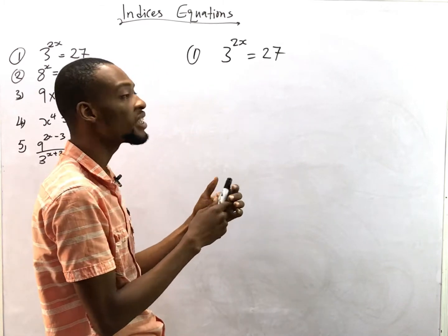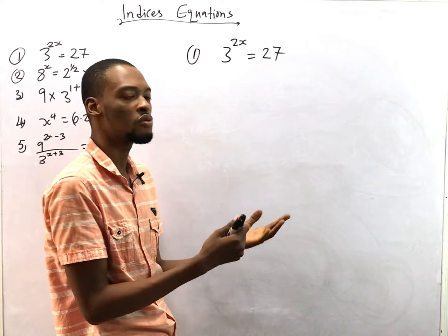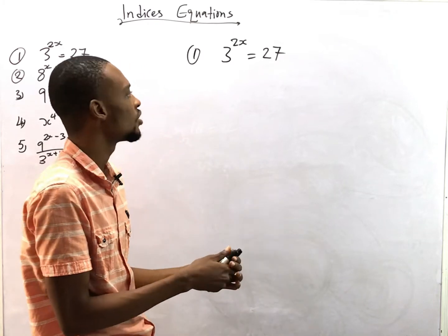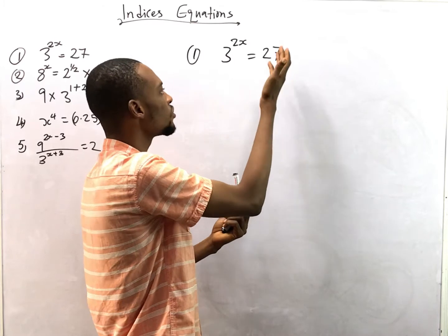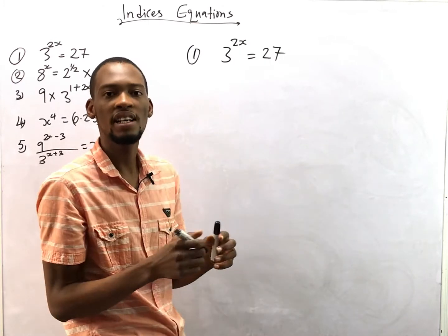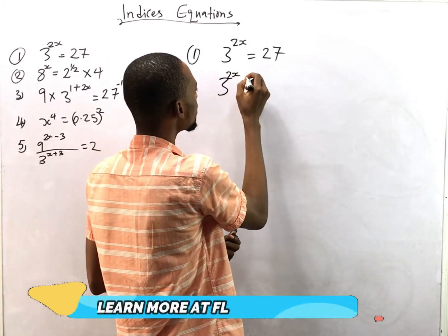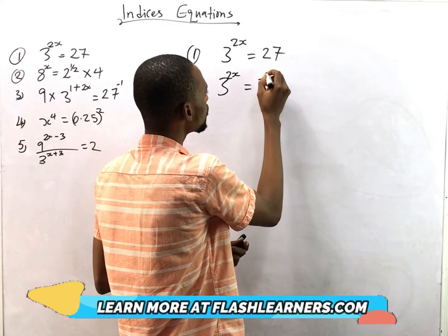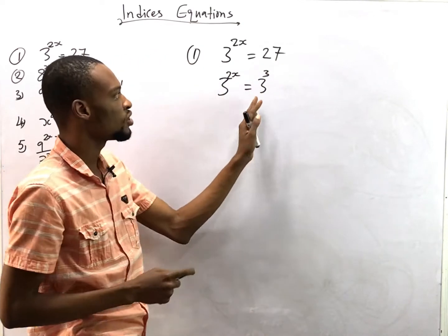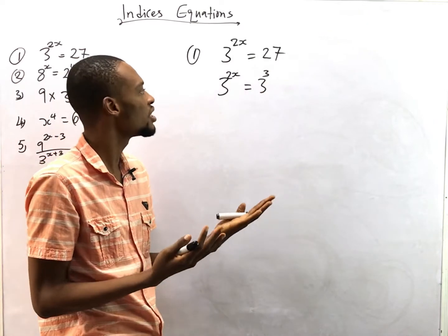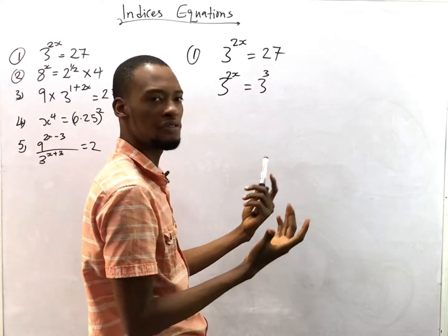Three times three is nine, and nine times three is 27, so that means 3 raised to the power of 3 gives you 27. Therefore 3^(2s) equals 3^3. This is the same as 27 — we haven't changed anything. With this, our solution is ready.